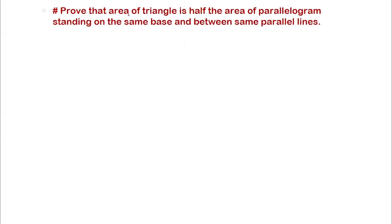Our theorem is: the area of a triangle is half the area of a parallelogram standing on the same base and between the same parallel lines. So if a triangle and a parallelogram stand on the same base and are between the same parallel lines, the area of the triangle is going to be half the area of the parallelogram.